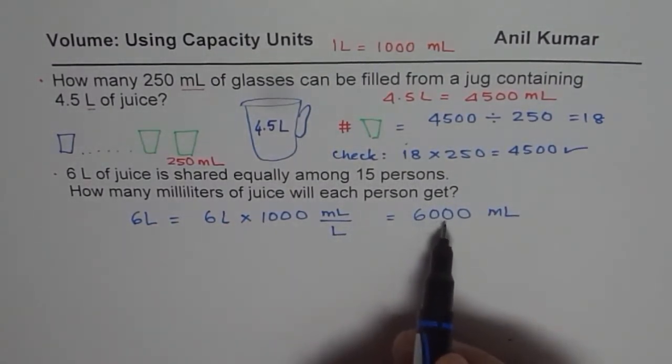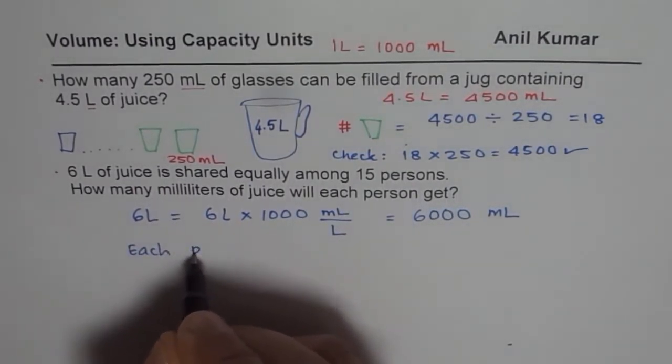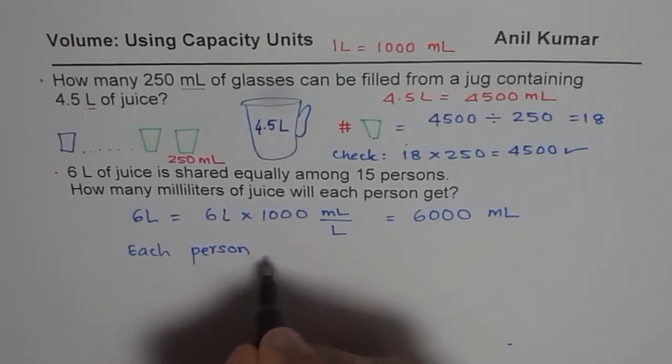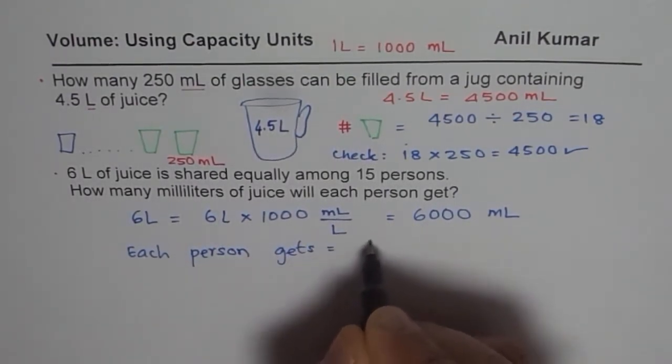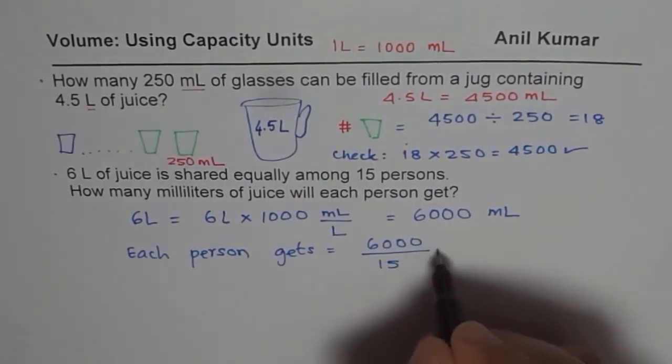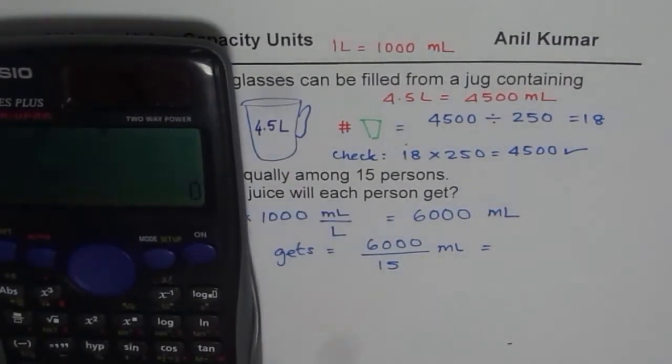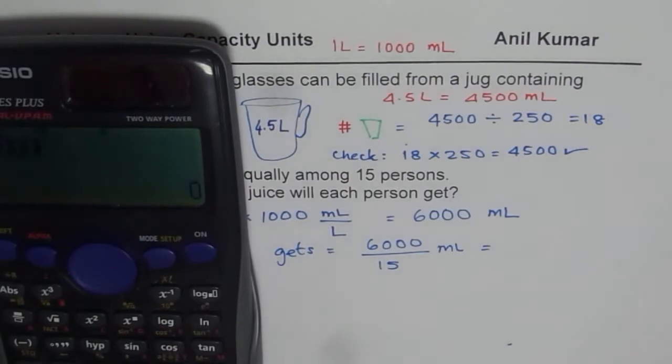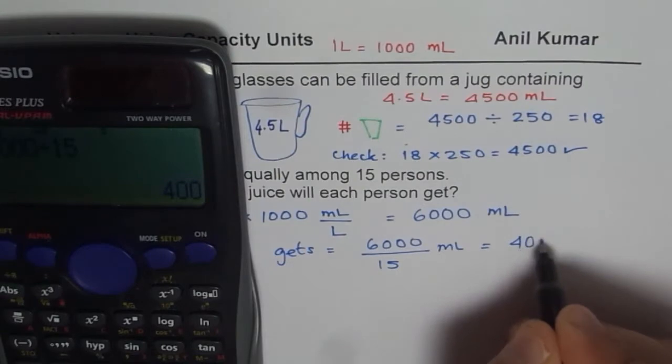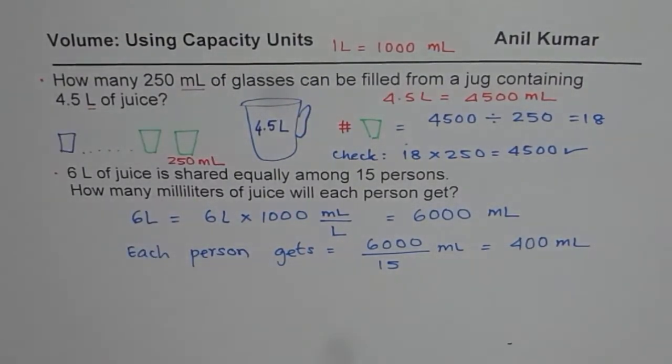Now that is to be shared among 15 people. So each person gets how much? So each person gets 6,000 divided by 15. So that much milliliters of juice each person will get. So let us do it using calculator. 6,000 divided by 15 equals to 400. So 400 milliliters of juice is what every person is going to get. So that is how you could solve this question.